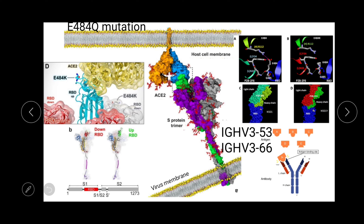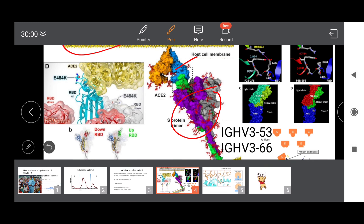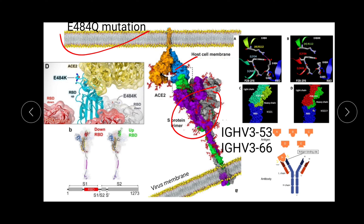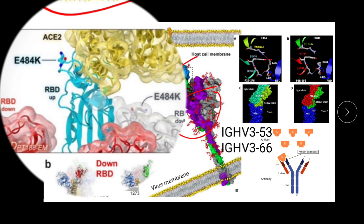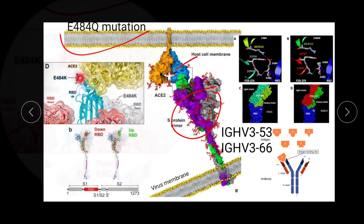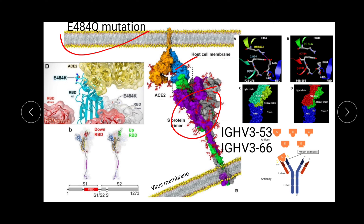In the next slide we will see how the E484Q mutation makes this virus more deadly. This is a replacement of glutamic acid by glutamine at the 484th position of the amino acid sequence. In the spike protein, which interacts with the ACE receptor of the host cell, position 484 is not on the directly interacting part — the amino acids here interact with the receptor, but position 484 is outside that direct interaction region, though it impacts and helps the interaction.